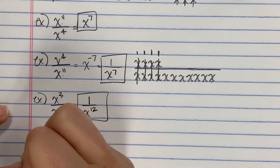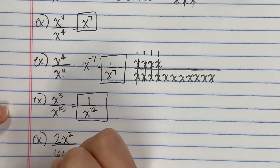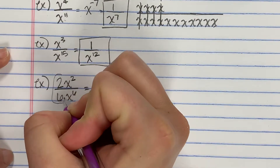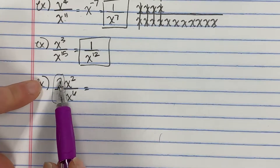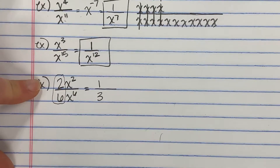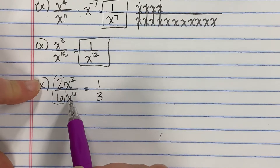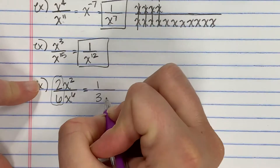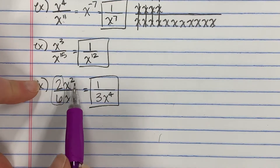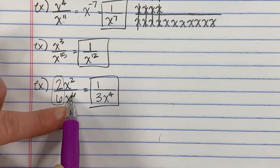If we throw coefficients on here and say 2x squared over 6x to the 6th — the coefficients behave differently. You're not going to be subtracting when it's a base number; this is an actual fraction: 2 over 6 simplifies down to 1 third. Then x squared over x to the 6th — subtract the exponents and get x to the 4th. Those 4 extras are going to be in the bottom. So coefficients simplify as fractions, while exponents get subtracted.